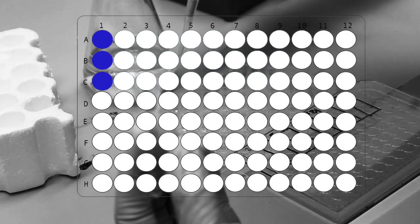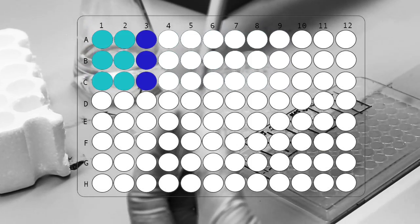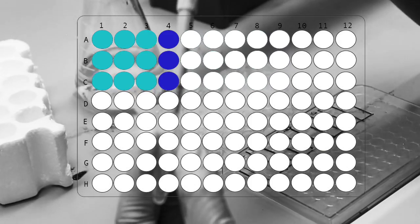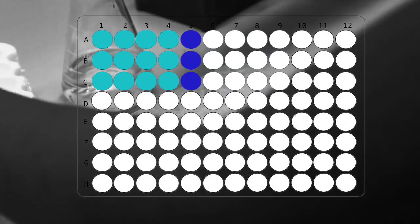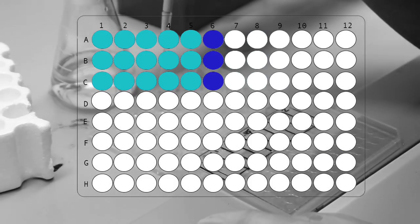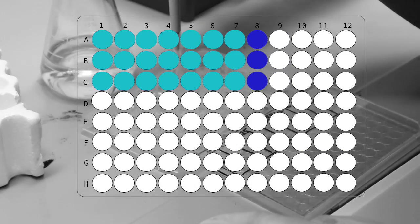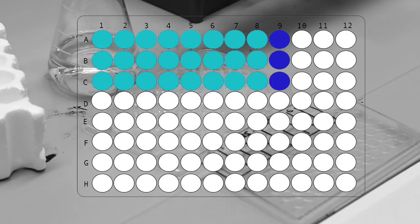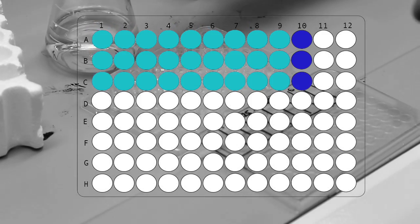In column 1, add 10 microliters of 2 molar BSA standard. In column 2, add 10 microliters of 1 molar BSA standard. In column 3, add 10 microliters of 0.5 molar BSA standard. In column 4, add 10 microliters of 0.25 molar BSA standard. In column 5, add 10 microliters of 0.125 molar BSA standard. In column 6, add 10 microliters of 0.0625 molar BSA standard. In column 7, add 10 microliters of KP buffer. In column 8, add 10 microliters of Q-beta and no KP buffer. In column 9, add 6 microliters of Q-beta and 4 microliters of KP buffer. In column 10, add 4 microliters of Q-beta and 6 microliters of KP buffer.